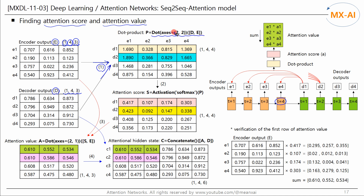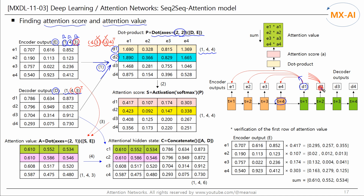Here, axes are set to (2, 2), meaning we perform a dot product so that the third dimensions are multiplied with each other. Except for the batch dimension, the 4×3 matrix and the transpose of the 4×3 matrix (a 3×4 matrix) are multiplied. The resulting tensor has the shape of 1, 4, 4. The first row vector is the dot product result for D1 and all encoder outputs E, and the second row vector is the dot product result for D2 and all E. This allows us to obtain a dot product tensor in one operation.